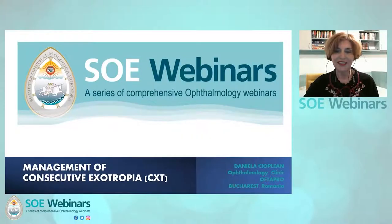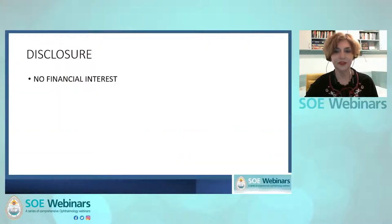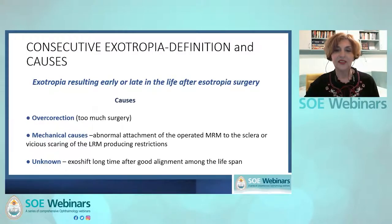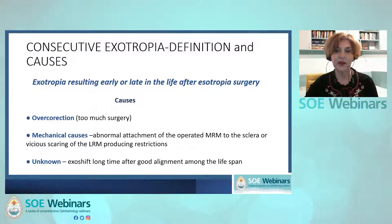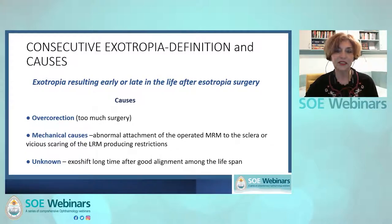Hello, dear colleagues. I'm Daniela Chioplian from Romania and I'm going to talk on the management of consecutive exotropia. Thank you for the invitation. I have no financial interest to disclose. Consecutive exotropia is the exotropia resulting early or late after esotropia surgery. There are different causes: overcorrection, mechanical causes, and unknown causes which produce an exo-shift long after good alignment.